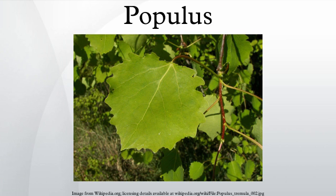Resistance against termites: in Pakistan, poplar is grown on a commercial level by farmers in Punjab, Sindh, and Khyber Pakhtunkhwa provinces. However, all varieties are seriously susceptible to termite attack, causing significant losses to poplar every year. Logs of poplar are therefore also used in termite traps for biocontrol of termites in crops.